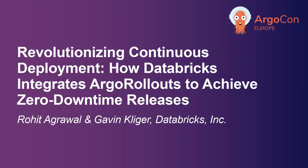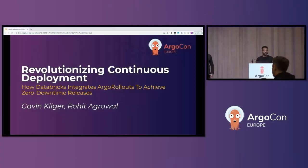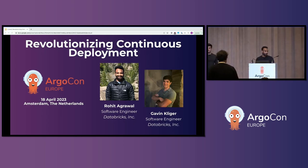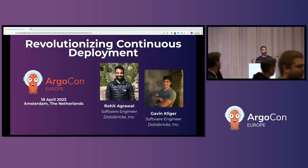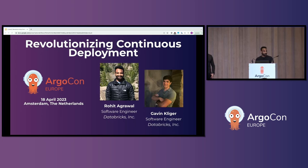Hello, everyone. Welcome to our talk. Today, we'll be talking about how at Databricks, we have integrated Argo Rollouts to achieve fully automated zero downtime releases. My name is Rohit Agarwal, and I'm a software engineer at Databricks. I'm currently focusing on application traffic infrastructure and safe deployments. Some of my ongoing projects are to make deployment zero downtime, safer, and more stable using technologies like Argo Rollouts. I'm also an active contributor to the Argo project.